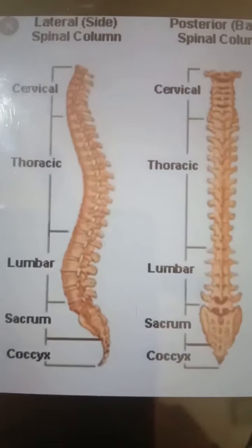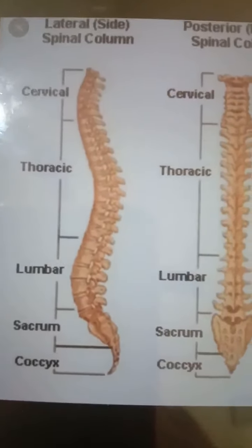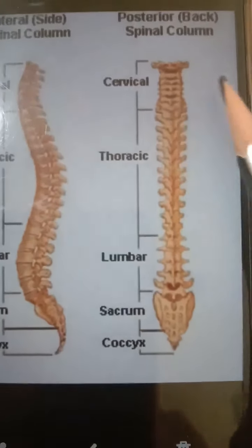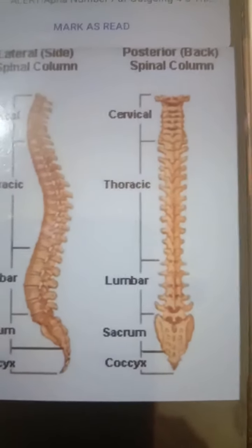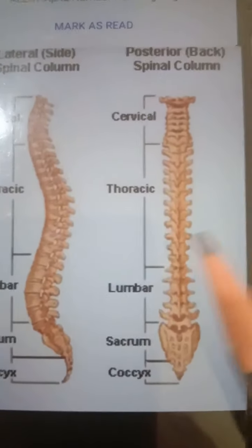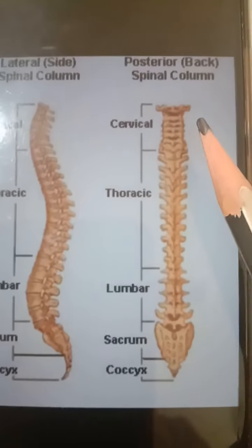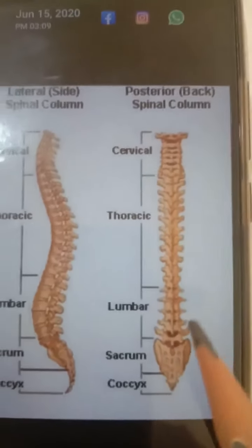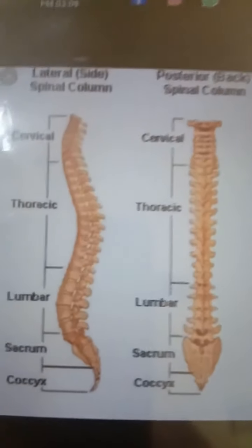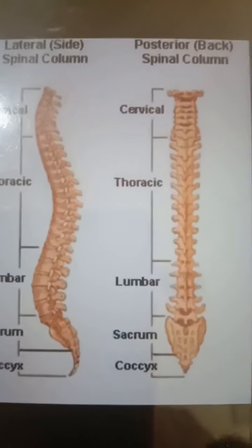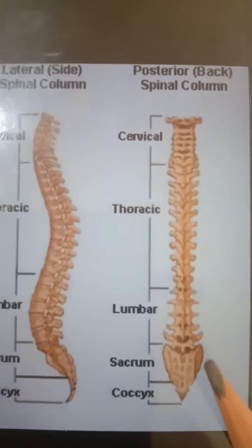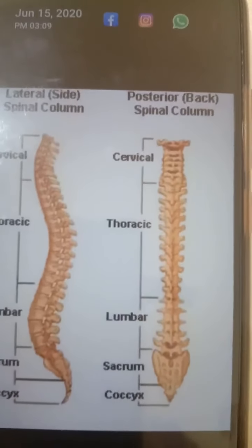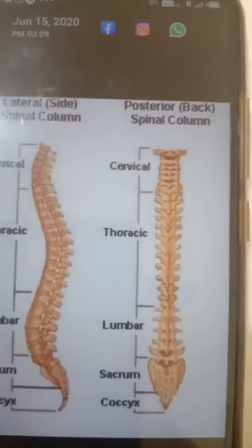The spinal nerves arising from the vertebral column are 31 pairs of spinal nerves, and they come out from both lateral sides of the vertebra. Out of these 31 spinal nerves, 8 are cervical, 12 are thoracic, 5 are lumbar, 5 are sacral, and 1 is coccygeal.